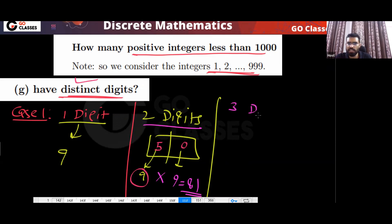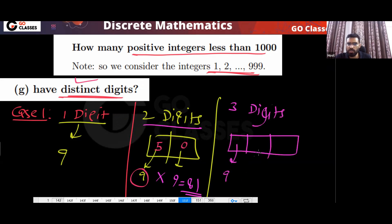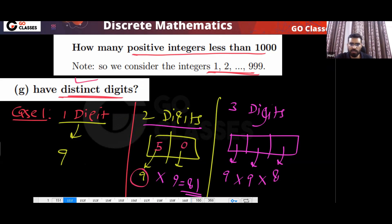For three-digit numbers with distinct digits: 9 choices for the first digit, 9 choices for the second digit (0 is now allowed), and 8 choices for the third digit. Now add all cases together — 9 + 81 + (9×9×8) — and that is your answer.